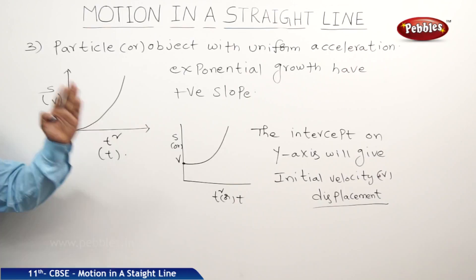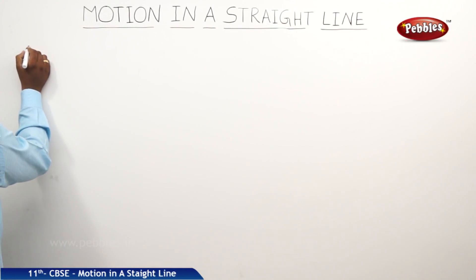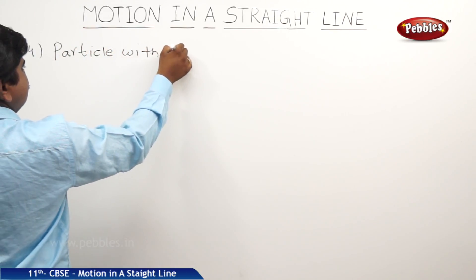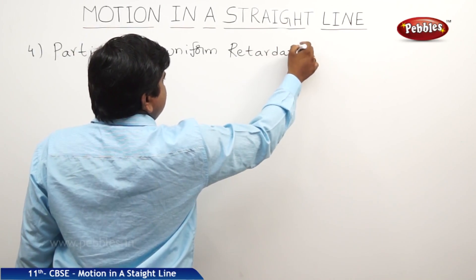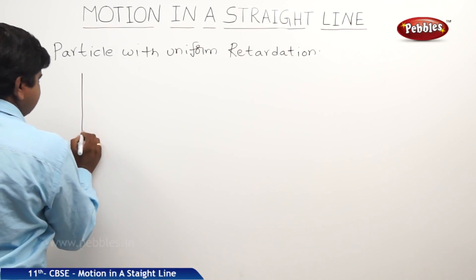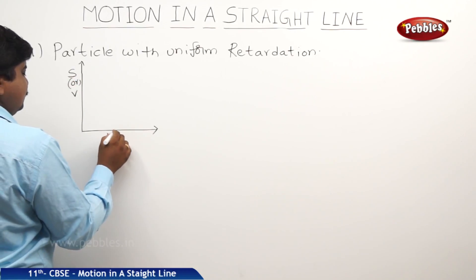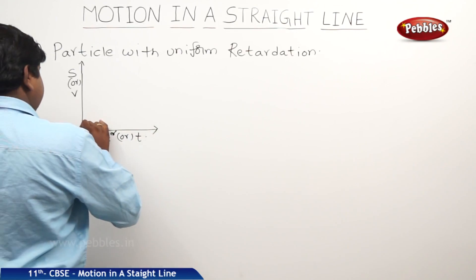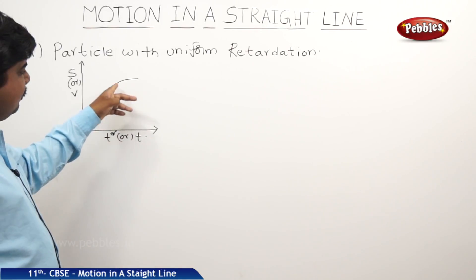We can see the different nature of the graph for different situations. The next one, particle with uniform retardation. Retardation means negative acceleration. The graph is like this. We can take s or v or root t square or t. This is the case. Then, the graph will be an exponential decay or parabola with decreasing slope.